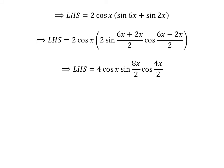Further simplification implies left-hand side is equal to 4 times cosine of x times sine of 8x/2 times cosine of 4x/2. Cancelling the common factor of 2 in numerator and denominator gives us: left-hand side equals 4 times cosine of x times sine of 4x times cosine of 2x,